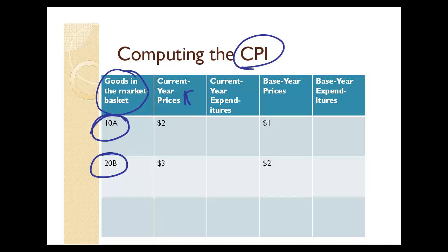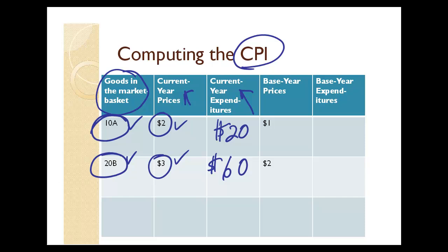In our second column, we look at current year prices of goods A and B. If the current year is 2011, we use 2011 prices; if it's 2012, we use 2012 prices. Our current year prices are $2 for good A and $3 for good B. Current year expenditures: 10 units of A at $2 each is $20, and 20 units of B at $3 each is $60.